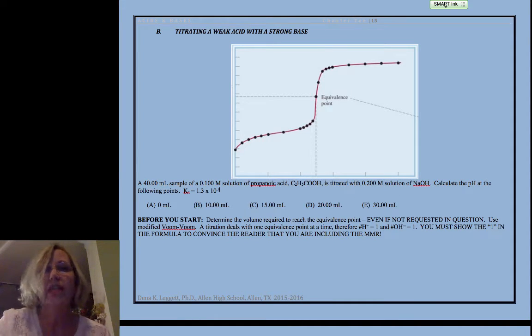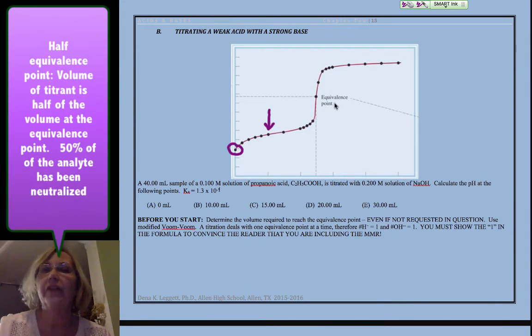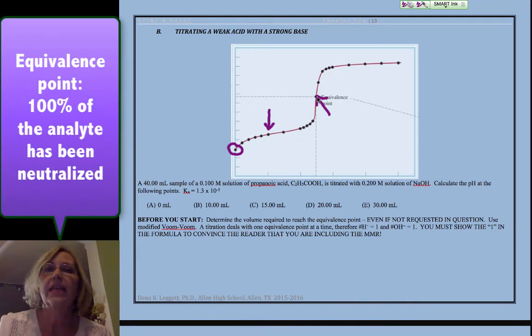We want to calculate the pH along the titration curve and find out what species are at each point. We're going to calculate at the beginning, at the halfway point called the half equivalence point, at the equivalence point, and after the equivalence point.